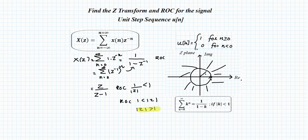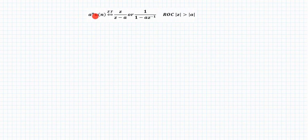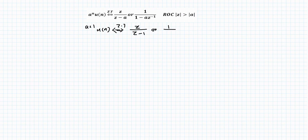Alternatively, using the standard result: a^n · U[n] ↔ Z/(Z − a), ROC |z| > |a|. For U[n], a = 1, so the Z-transform is Z/(Z − 1), or equivalently 1/(1 − z^(−1)), with ROC |z| > 1. This confirms our earlier result.